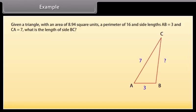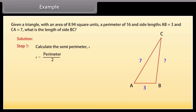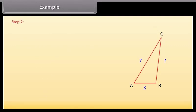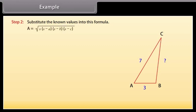Given a triangle with an area of 8.94 square units, a perimeter of 16, and side lengths AB = 3 and CA = 7, what is the length of side BC? Step 1: Calculate the semi-perimeter S = perimeter / 2. Here the perimeter given is 16, therefore S = 16 / 2 = 8. Step 2: Substitute the known values into the formula A = √(S(S−A)(S−B)(S−C)). Since the value of BC is not given, let X be the length of BC.